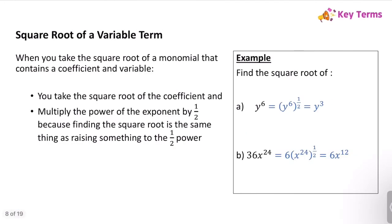I want to remind you how we find the square root of a variable term, because we'll need to do that in this process. If it's a term with an exponent, we just take half of the exponent — so the square root of y⁶ is y³. If we have a coefficient and a variable with an exponent, we take the square root of the coefficient (the square root of 36 is 6), then half the exponent, giving us 6x¹².